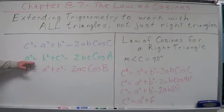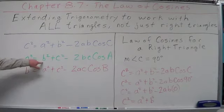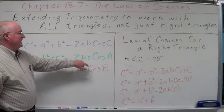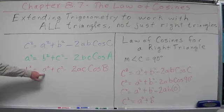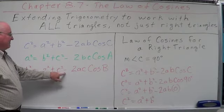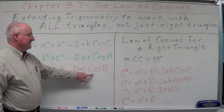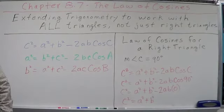And we can do it for another side: a squared equals b squared plus c squared minus 2bc cosine of a. b squared equals a squared plus c squared minus 2ac times the cosine of b. That's what it is.